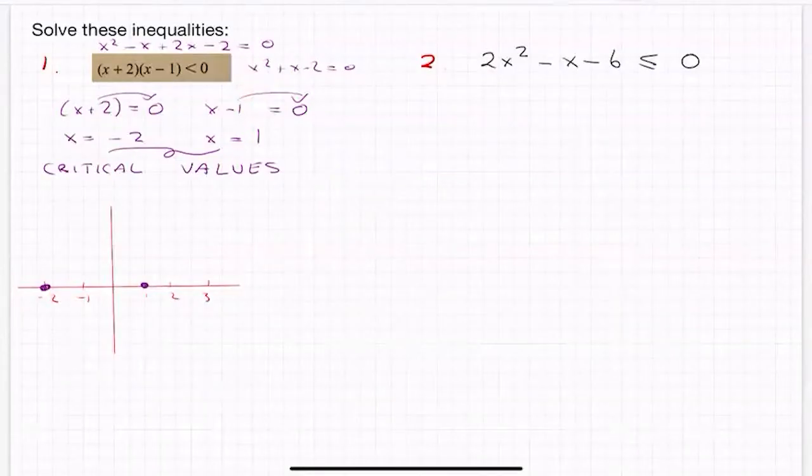Now, the reason I worked out the original quadratic was I wanted to know, would it be a smiley face or a sad face? Smiley face being a quadratic that looks like that, a sad face being a frown one that looks like that. And you tell from the sign in front of x squared. If that's positive, it's happy. If it's negative, it's sad.